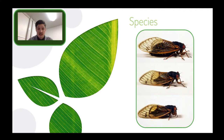Species is the smallest, most specific group in the classification. Organisms in the same species can reproduce together and their offspring are fertile. That's what defines a species — two things that can mate and produce fertile offspring, meaning the offspring can then also mate.